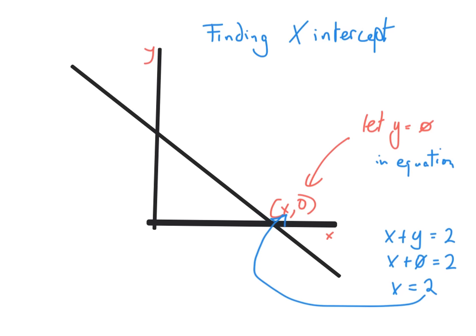The rule for getting where a line cuts either axis is easy to remember: to find where it cuts the x-axis, let the opposite letter — y — equal zero; to find where it cuts the y-axis, let x equal zero. Once we get our two points, we plot them and draw the line through them.